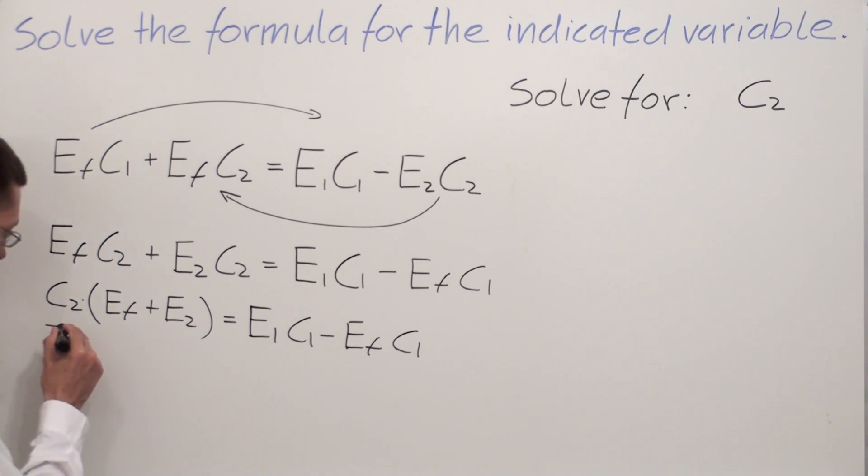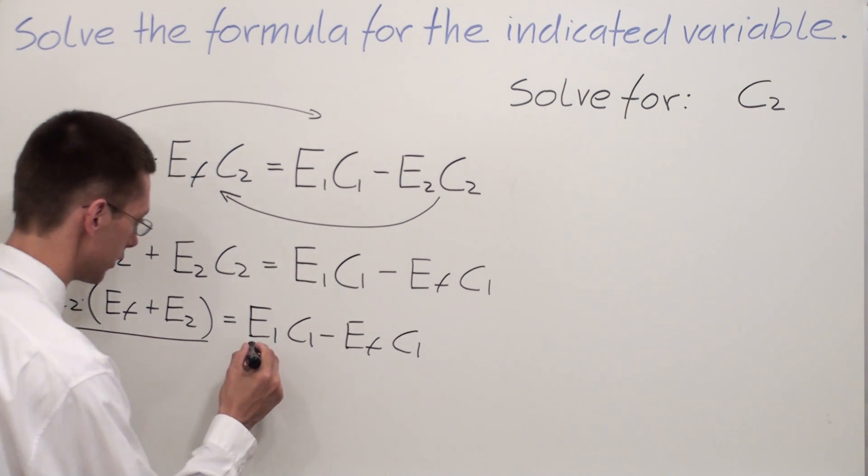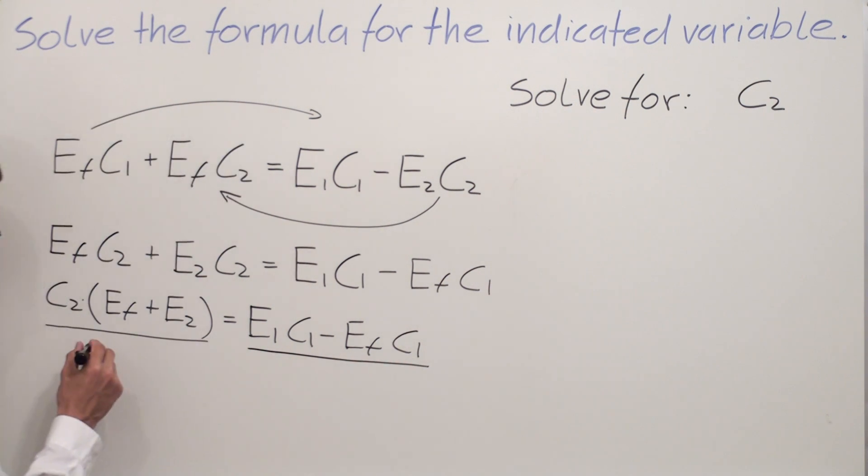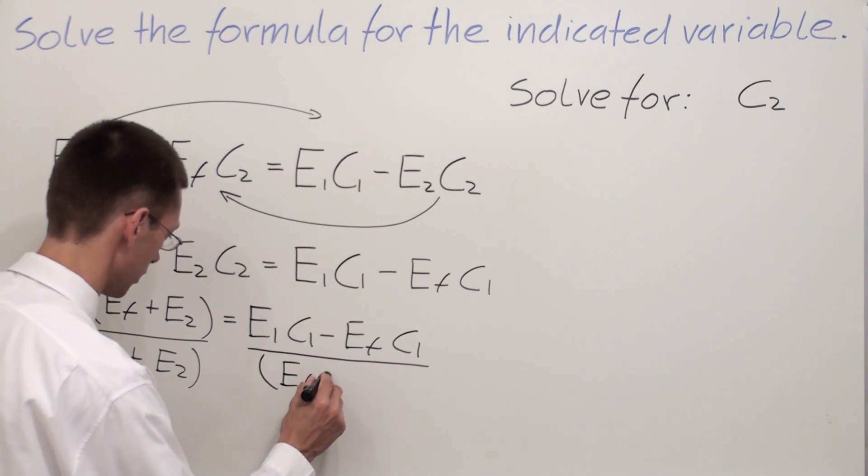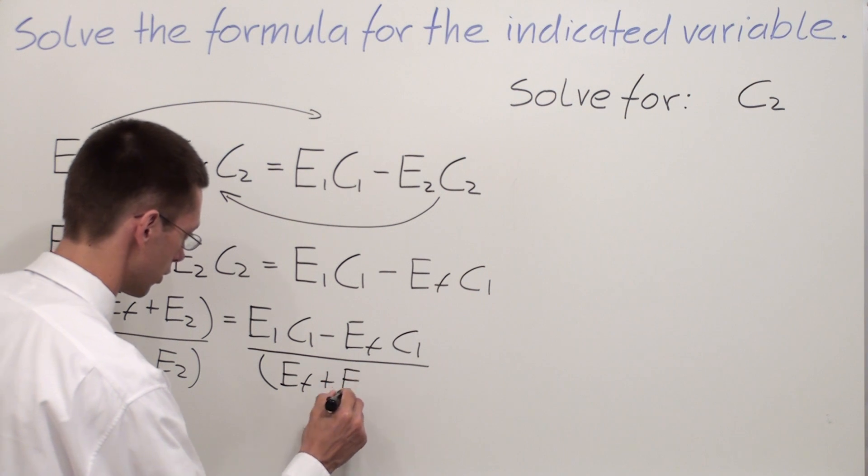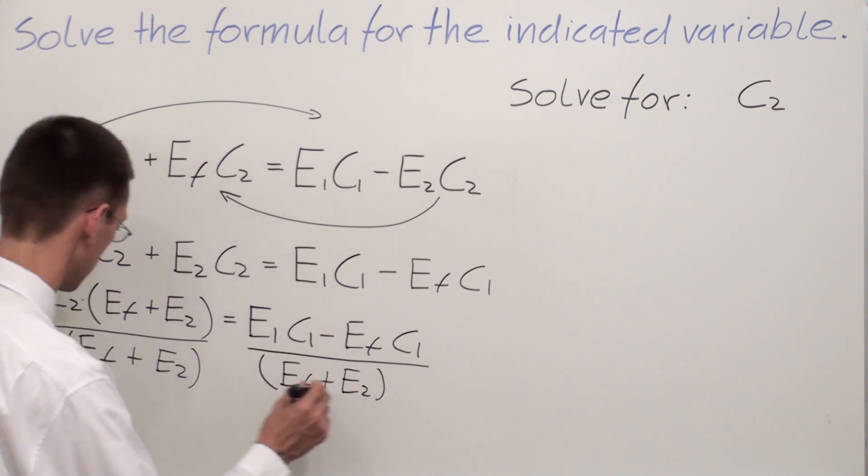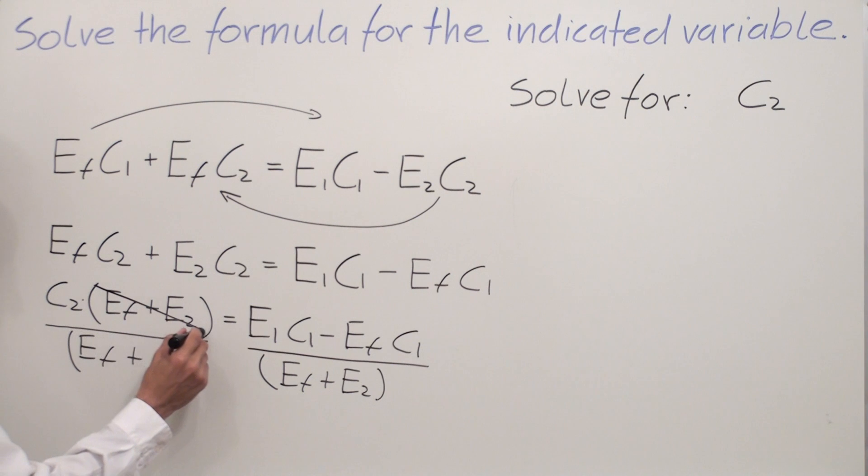In other words, we are going to divide both sides of this formula by EF plus E2, the parenthesis. So EF plus E2 will cancel out.